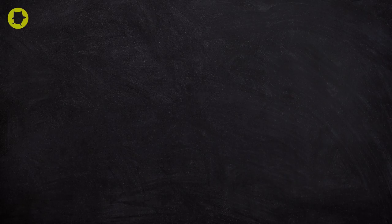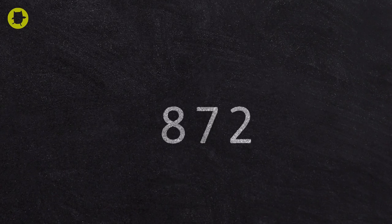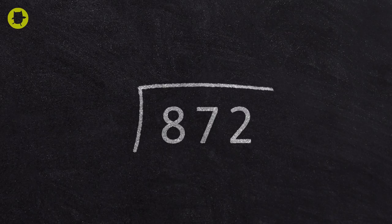Let's take 872 divided by 4. In this example, the dividend is 872 because it is the number divided by the divisor, which is 4. To use short division to work out the calculation, we have to set the calculation out like this.